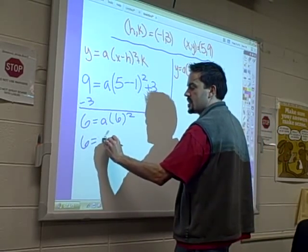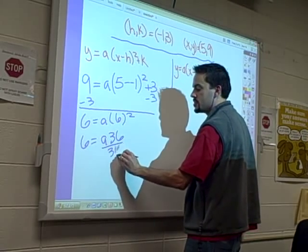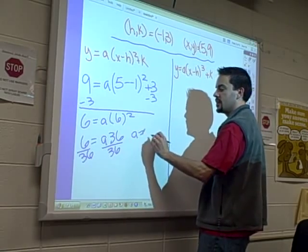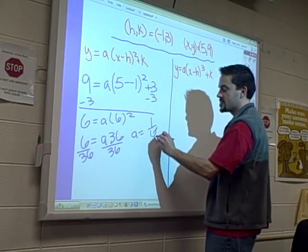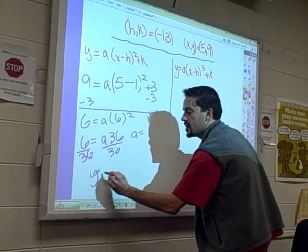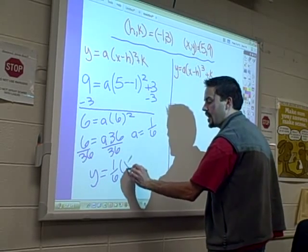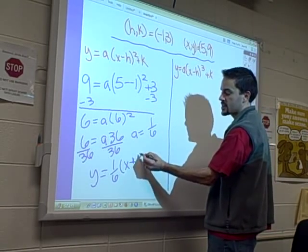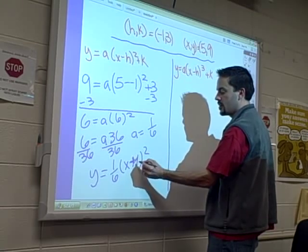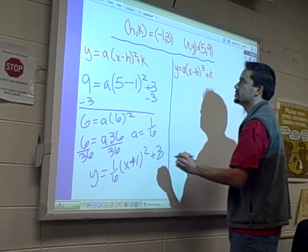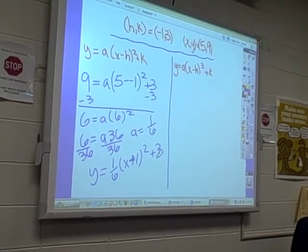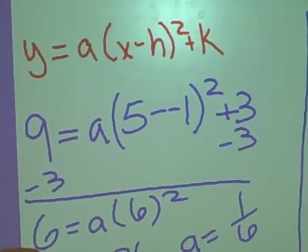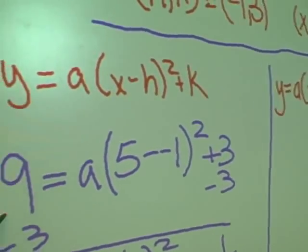Six equals a times 36. And we divide both sides by 36. And you can see that my a value is six over 36, which simplifies into one-sixth. And so now this equation, y equals one-sixth x minus, no, minus a negative one. So x plus one quantity squared plus three. Bring the camera in nice and close. And I'm not going to do this for every problem, but you're going to see the process. It is that straightforward.